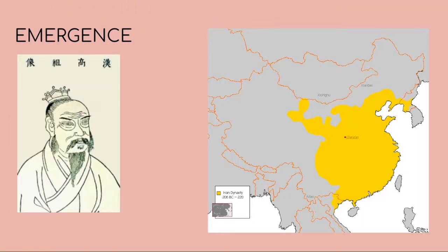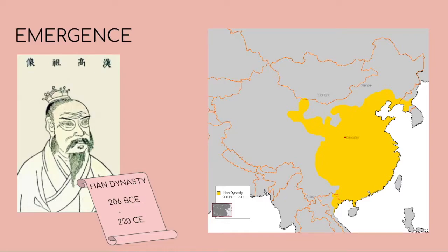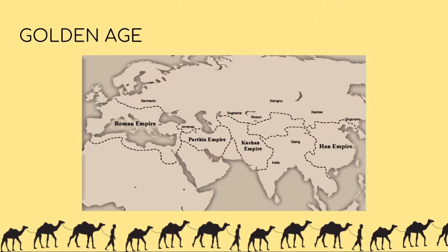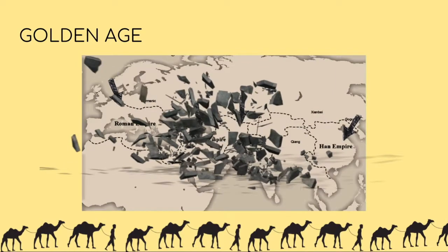But it wouldn't be until the Han Dynasty, around 206 BCE to 220 CE, that the transregional commercial routes were established as such. The markets and products of the Han, Kushan, Parthian, and Roman empires may have created the Silk Road, but the trade and cultural exchanges that resulted did not reach full maturity and splendor until after these empires had collapsed.